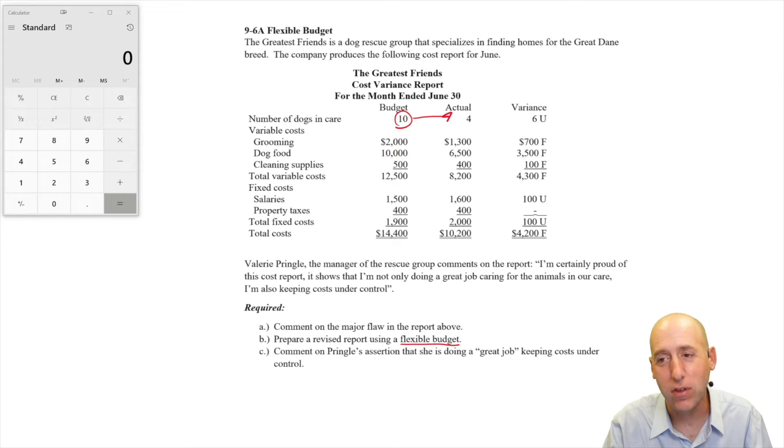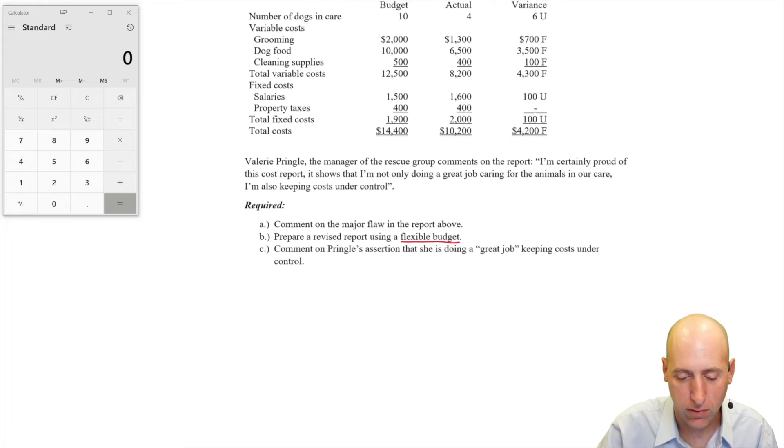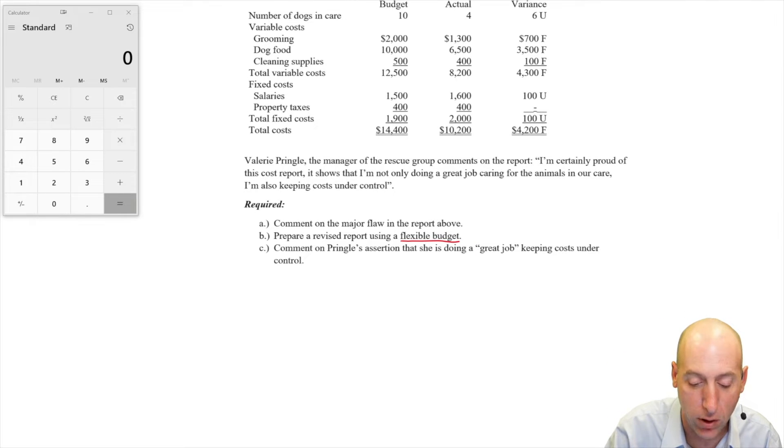What we ought to do is prepare something called a flexible budget, which is, after the fact, after the period's over, go back in time and pretend we were going to do a budget before the year, before we knew our actuals, but pretend we were going to do a budget at four dogs, the actual level of activity for our company. So let's do it for the Greatest Friends, and I think we'll have some revelations.